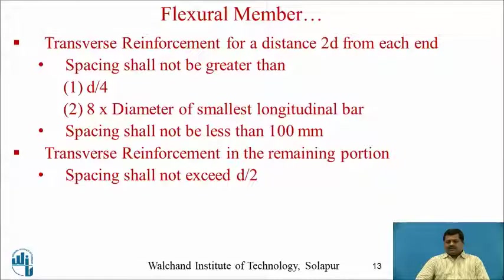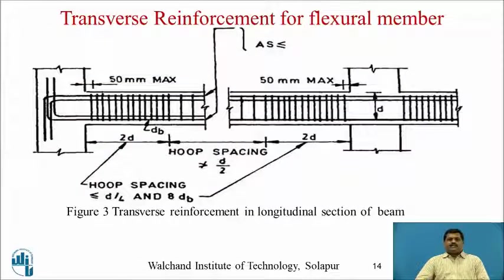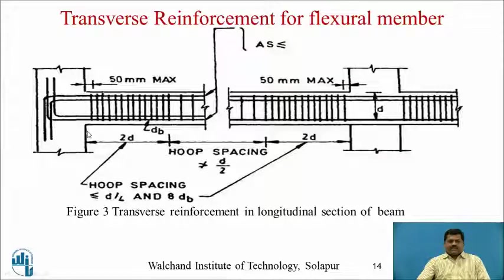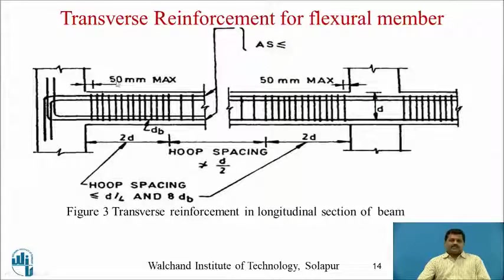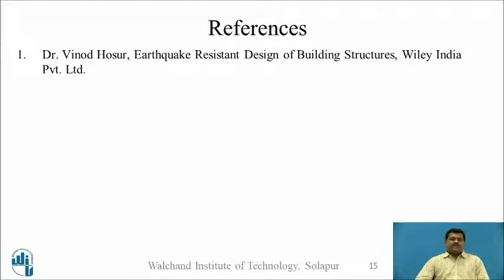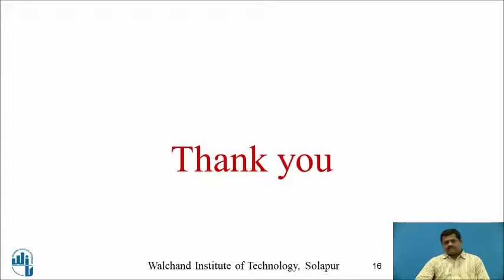The sketch illustrating transverse reinforcement for the flexural member shows: at the confinement zone (twice the depth from the joint face), hoop spacing is d/4 or 8 times the bar diameter, whichever is lesser; at the middle portion, hoop spacing must not exceed d/2, where d is the depth of the section. All reinforcement must be provided according to these provisions. Thank you.